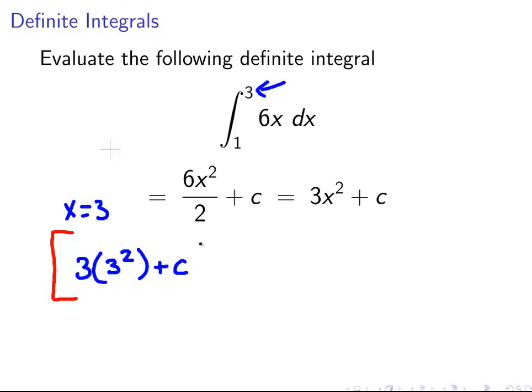So 3 times 3 squared plus c. And again, we include the coefficient of integration. But really, it's not an important part of the calculation. Now we're going to look at the lower limit, the 1. And this is 3 times 1 squared plus c.